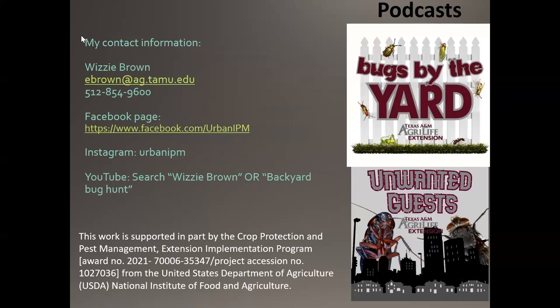Q&A: Someone asks how to distinguish wolf spiders from funnel web spiders. If you're looking at a spider specimen only, you need to examine the eye pattern. But if you're observing them in nature, the funnel web spider will have a sheet web with an essentially tornado-funnel shape going down to where the spider rests, whereas wolf spiders either have a burrow they retreat into or find a crack and crevice. Environmental context makes it easier to tell them apart; otherwise, look at the eye pattern.